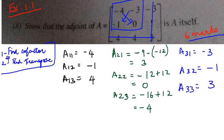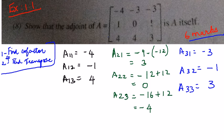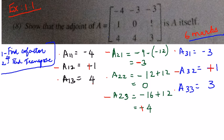Now let's put the signs. In a 3×3 matrix, you have to put the signs alternatively for cofactors, starting with positive — so the pattern is: positive, negative, positive, negative, positive, negative, positive, negative, positive. So A₁₁ remains minus 4; A₁₂ sign changes to plus 1; A₁₃ remains plus 4. A₂₁ sign changes to minus 3; A₂₂ is 0; A₂₃ sign changes to plus 4. A₃₁ remains minus 3; A₃₂ sign changes to plus 1; A₃₃ remains positive 3.